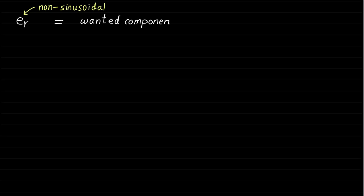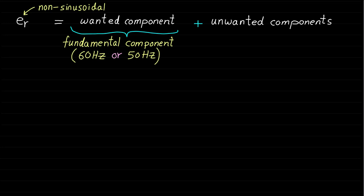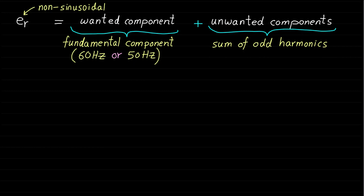The first component is the wanted component, called the fundamental component, which is a pure sinusoidal waveform with a frequency equal to 60 Hz or 50 Hz. The unwanted components are represented by some odd harmonic components such as the 3rd, 5th, 7th, 9th, and so on. These odd harmonic components are also pure sinusoidal waveforms.